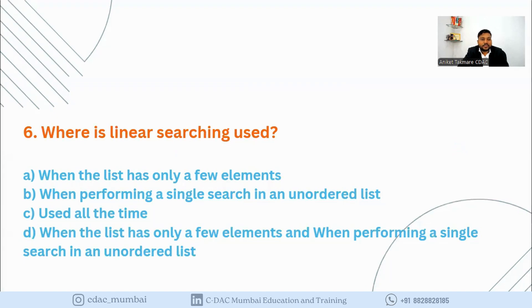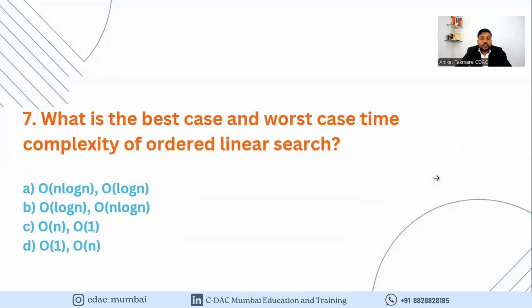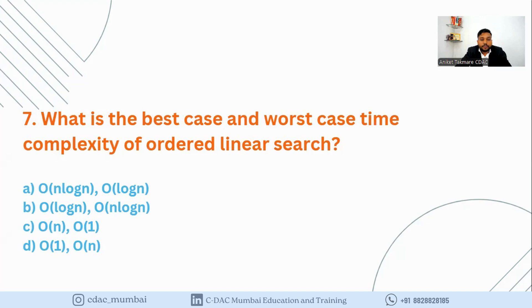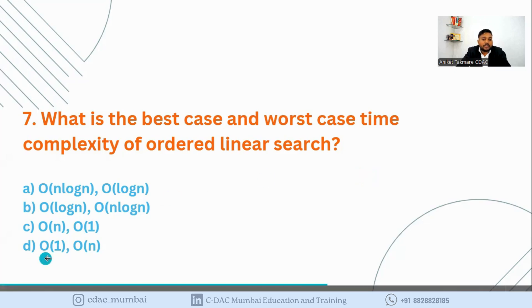The next example: what is the best case and worst case time complexity of linear search? Time complexity is the time required to complete a particular task. In the best case, if the element is present at the first position, the complexity is O(1). In the worst case, if the element is at the last position, it is O(n). So option D — O(1) best case and O(n) worst case — is the correct answer.